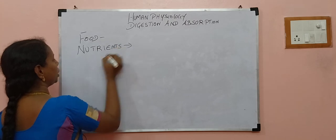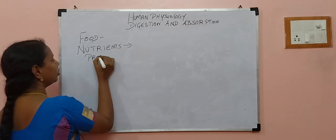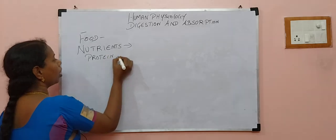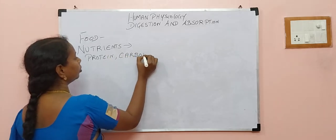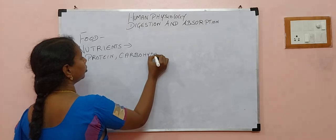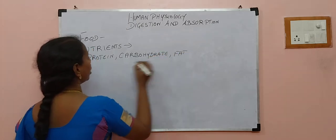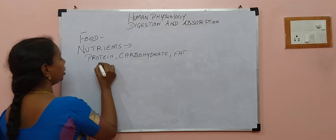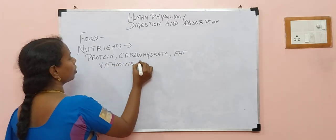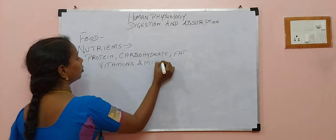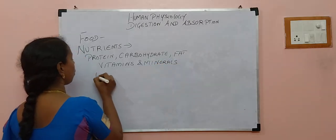So what are those nutrients? It consists of protein, carbohydrate, fat, and a little quantity of vitamins, minerals, and also water.